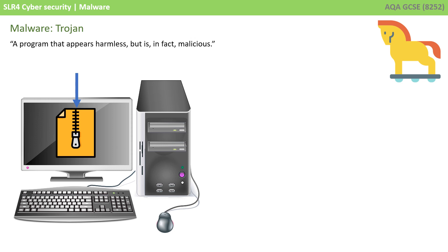The next category are trojans. This is a program that appears completely harmless but is in fact malicious. A lot of people receive trojans when they download software, games, patches, or other data from the internet from unreliable sources. Always make sure you're getting downloads from trusted vendors.